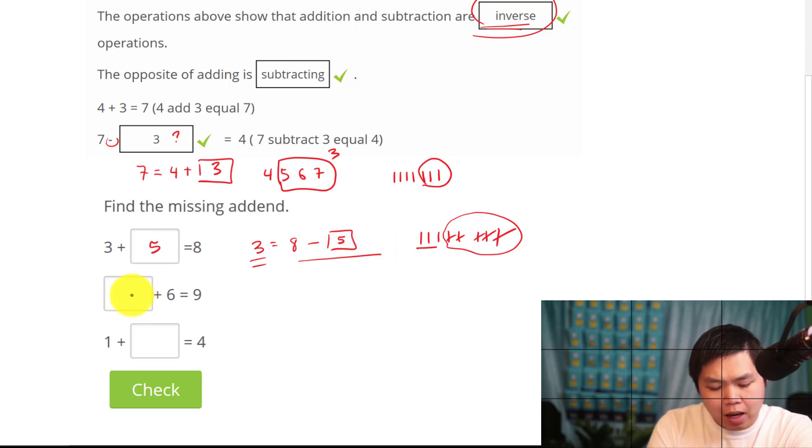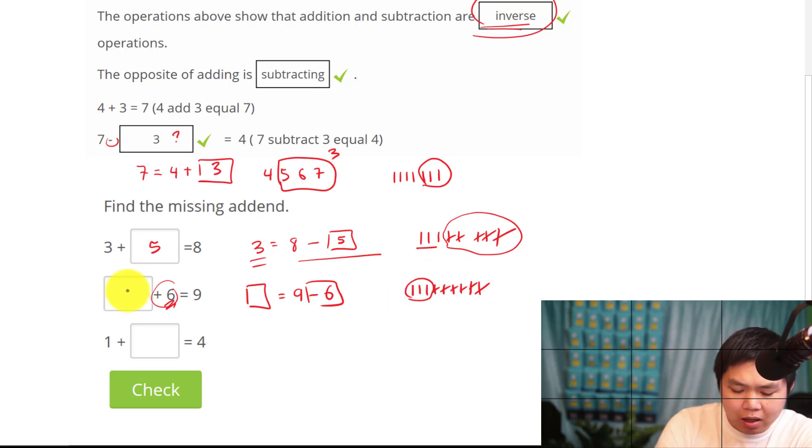The same thing here. A box plus 6 is equal to 9. Well we're adding 6 right here. Let's look at a different way. What's the opposite of adding 6? Well we can subtract 6. So in this case, that box is equal to 9 minus 6, which is the opposite of adding, right? What's 9 minus 6? So 9, let's start drawing out 9, 1, 2, 3, 4, 5, 6, 7, 8, 9. And minus 6. 1, 2, 3, 4, 5, 6. What do we have left? 3. So the answer is 3.